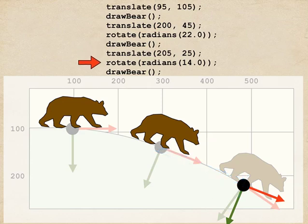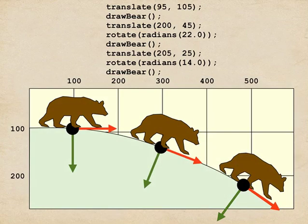Then I measured the amount by which I wanted to rotate and I discovered that was about 14 degrees. So I rotate by 14 degrees, putting my coordinate system where I want it. And now I'm ready to draw my final bear. I draw the bear and I have the picture I was after.